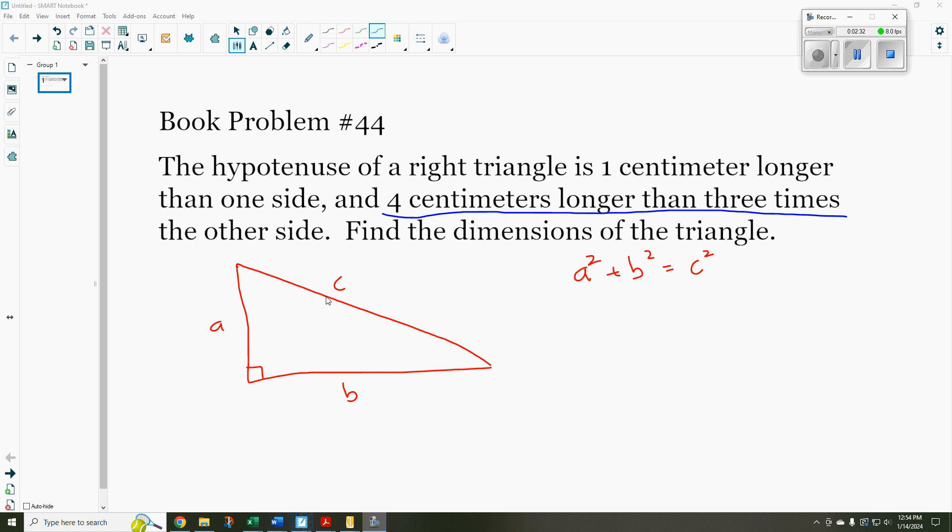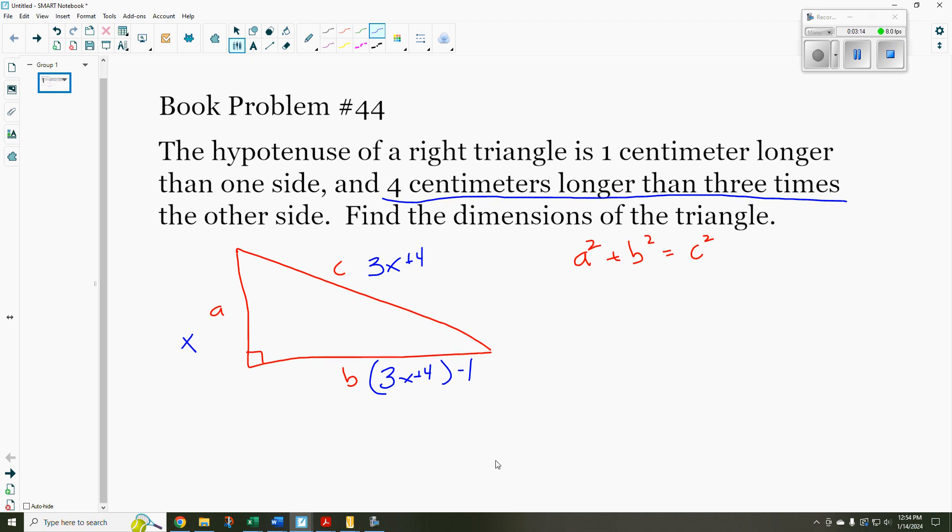Since side A seems to be our problematic side, let's call that x. So I'm calling side A x. So I know that the hypotenuse is three times x plus four. I can do that. Three times x plus four. I'm getting integers now. I'm not getting fractions. And B, well, that's one centimeter smaller than the hypotenuse. So that's three x plus four minus one. Now I can start using the Pythagorean theorem.